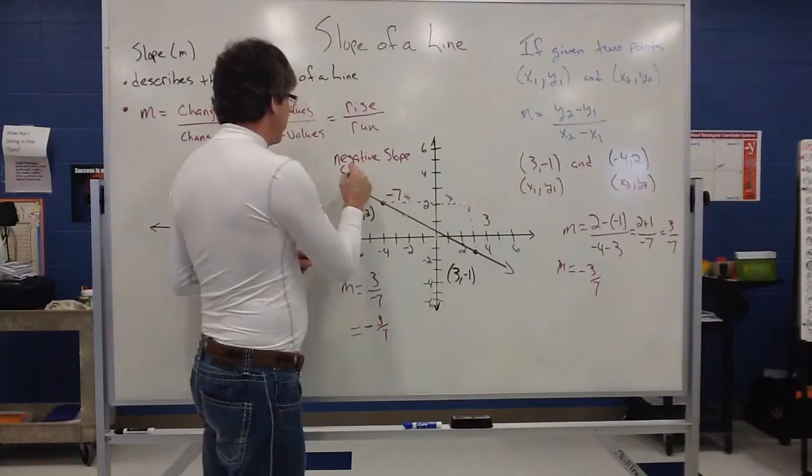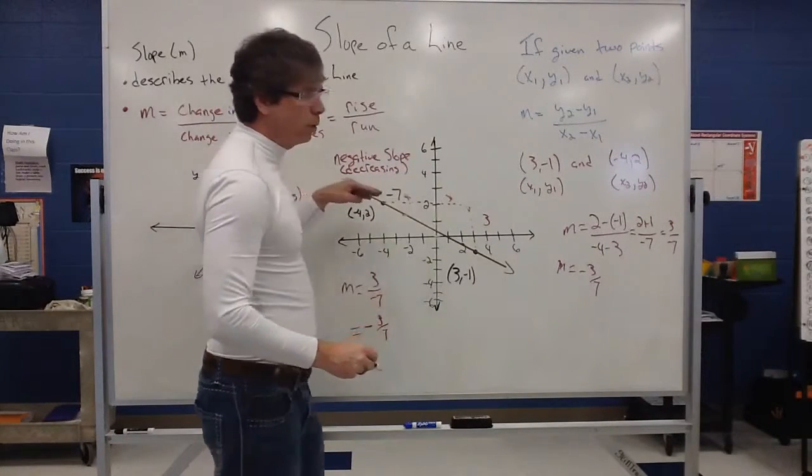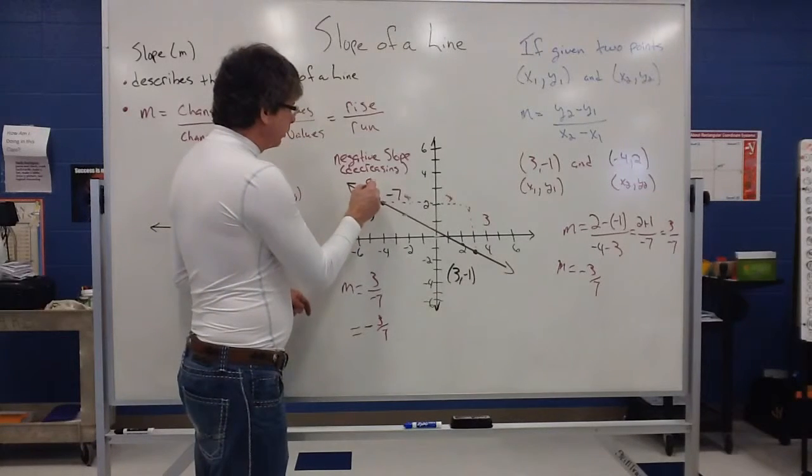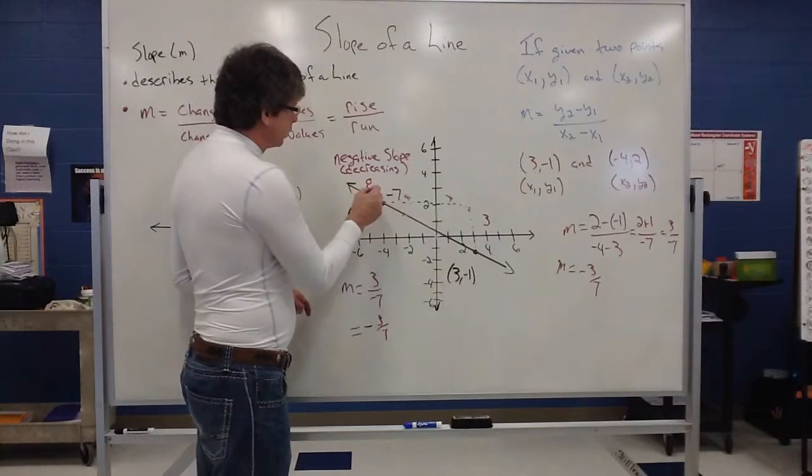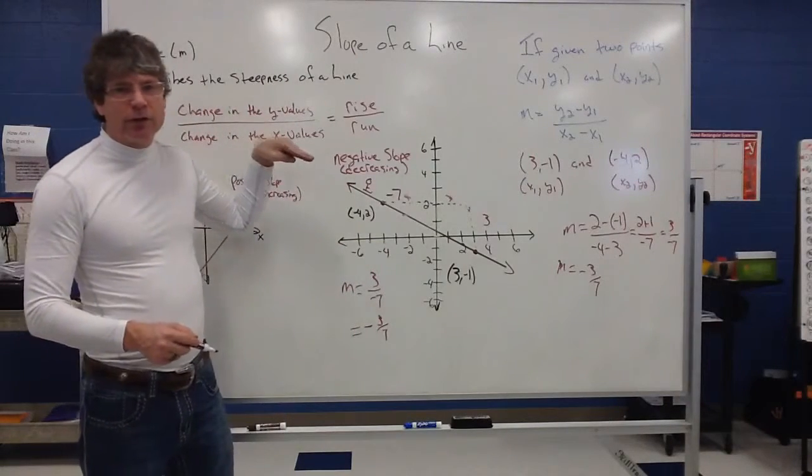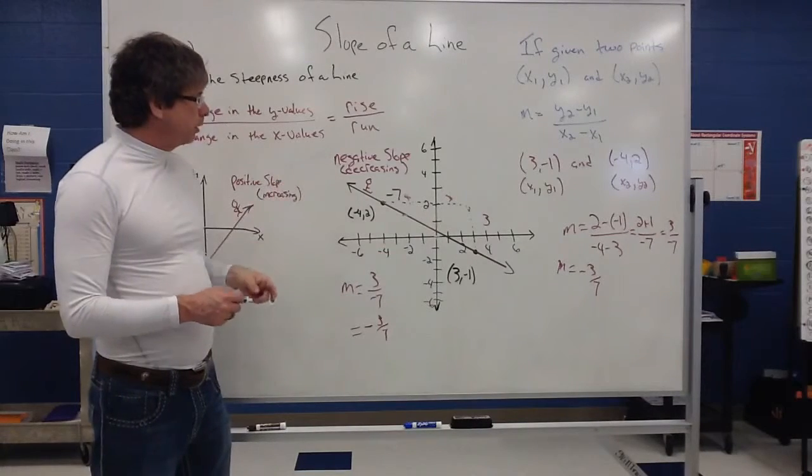Also, we refer to that as decreasing in value. It's going in a downward or decreasing motion. A lot of times decreasing, I use my little skier for that. The skier kind of goes downhill. So if my skier fits the situation, that's going to be described as a negative slope or a decreasing slope.